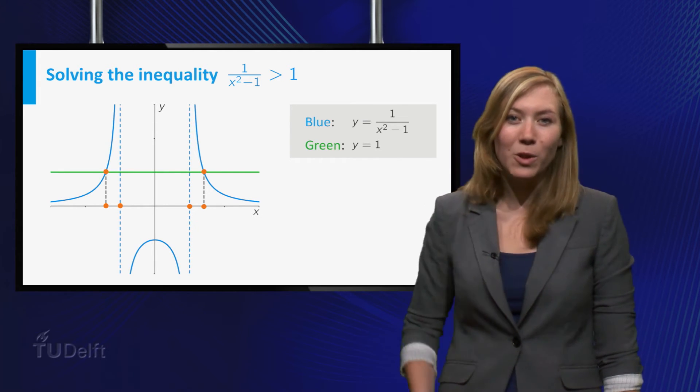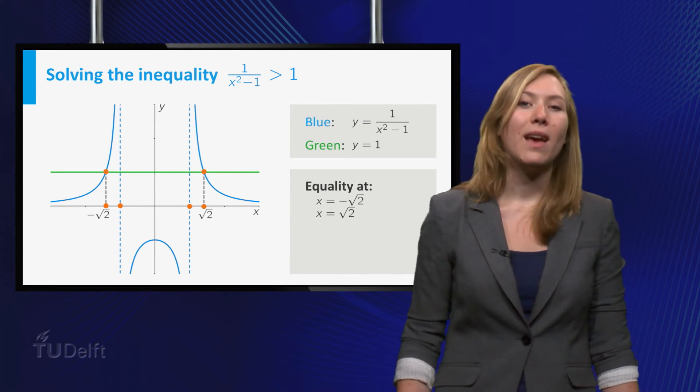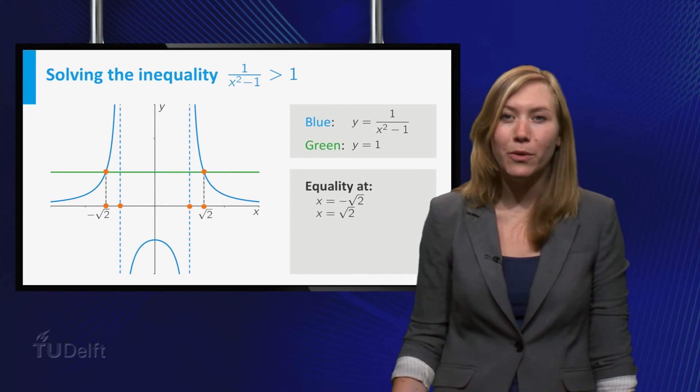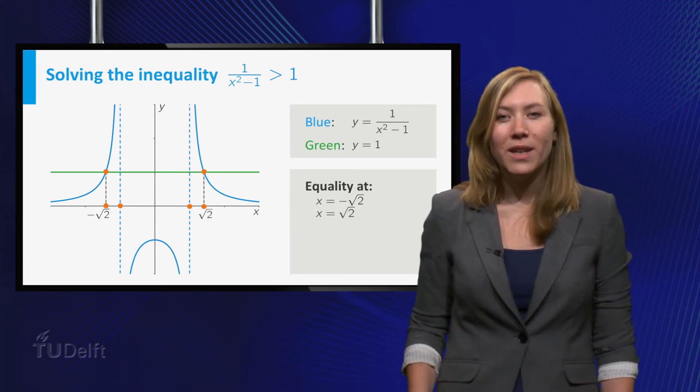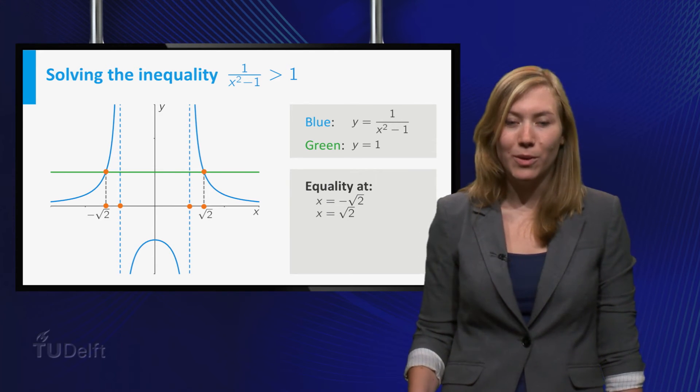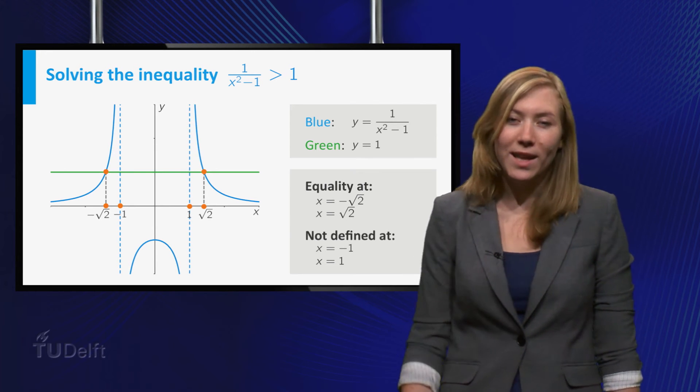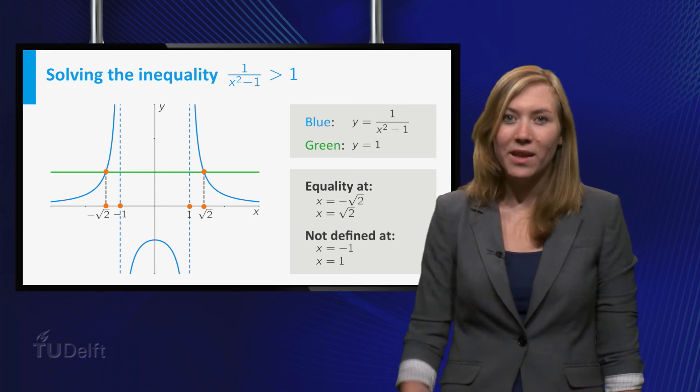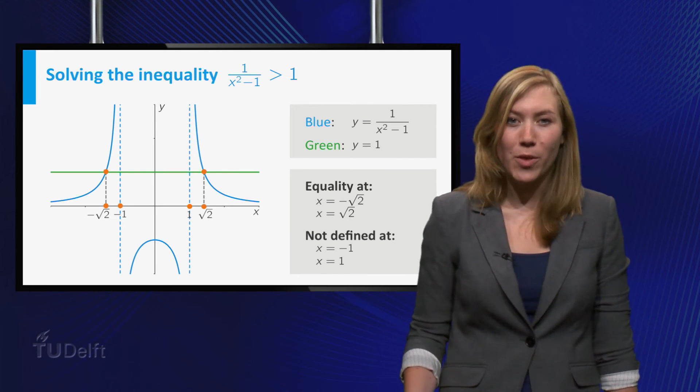Given an inequality, you must find the x values where both sides are equal. In this case, x equals minus the square root of 2 and x equals the square root of 2. But also find the x values where the functions involved are not defined or discontinuous. In this case, this happens at x equals minus 1 and x equals 1, since the denominator of the left hand side of the inequality is zero there.